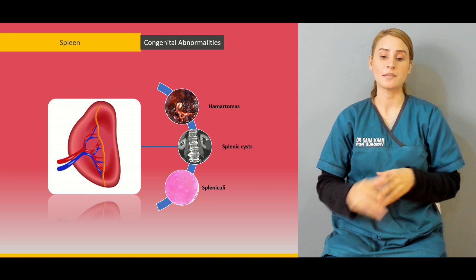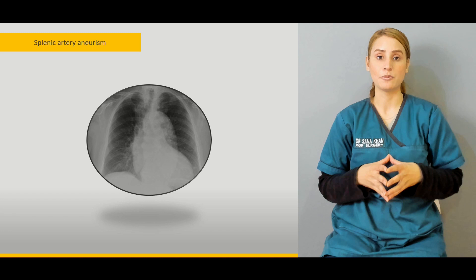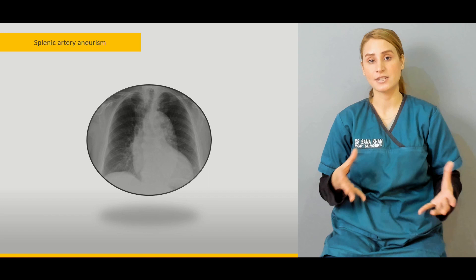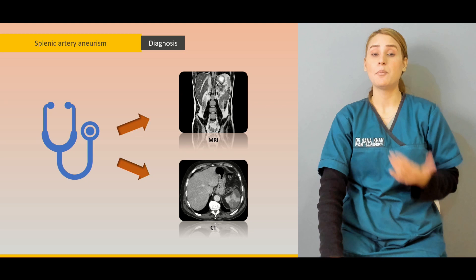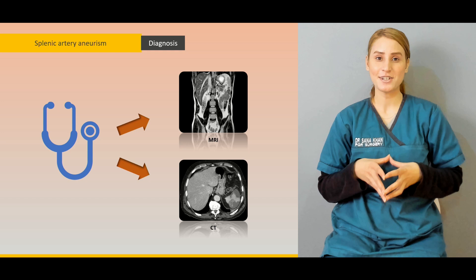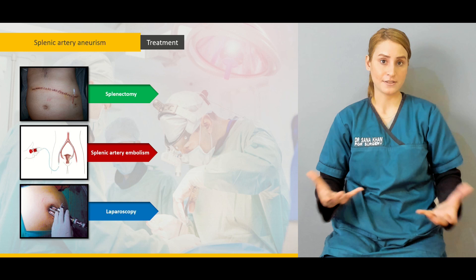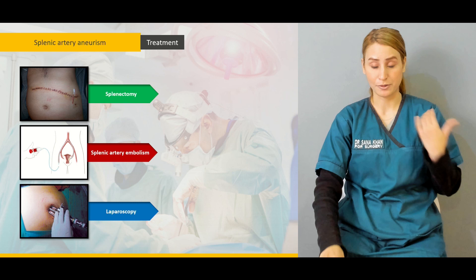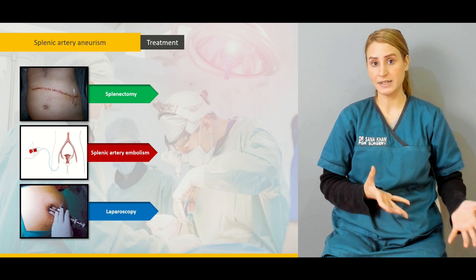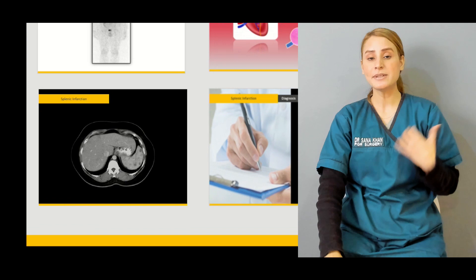Then we'll be talking a little bit about the congenital anomalies of the spleen, hematomas, splenic cysts, and splenic calculi. Our main focus today is about the aneurysm — we'll be talking about the causes behind the development of the aneurysm, the clinical presentation, and which investigations are going to help in the diagnosis. Then we'll be talking about the treatment options available, like splenectomy, splenic artery embolization, and laparoscopy, and the scenarios in which you will do splenectomy versus embolization.